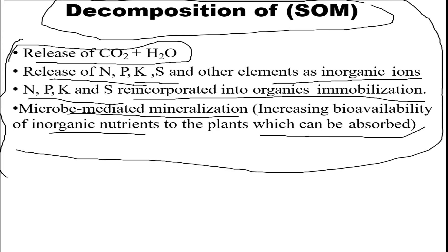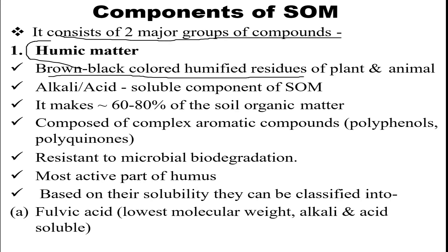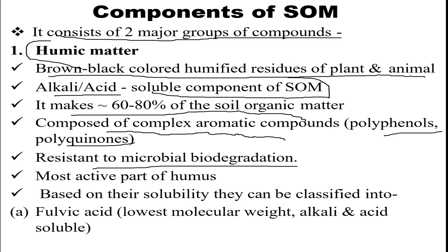Moving on to the components of SOM, it consists of two major groups. First is humic matter — the brown-black colored humified residues of plants and animals. This is the alkali-soluble component of SOM, making up about 60 to 80 percent of soil organic matter. Humic matter is composed of complex aromatic compounds, mainly polyphenols or polyquinones. It is resistant to microbial/biological degradation and is the most active part of humus. Based on solubility, it is classified into fulvic acid (lowest molecular weight), humic acid, and humin.